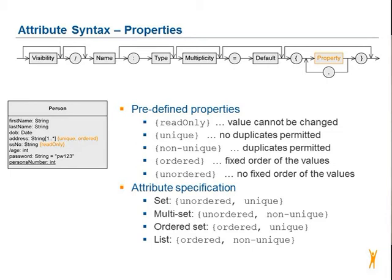For a multi-set, the attribute specification should be unordered and non-unique. For an ordered set, ordered and unique. And for a list, ordered and non-unique.